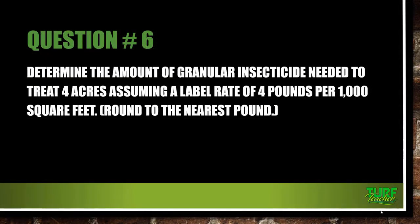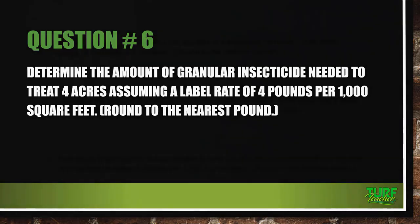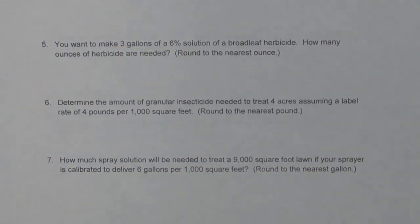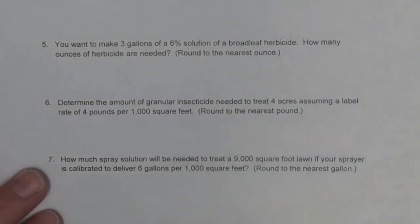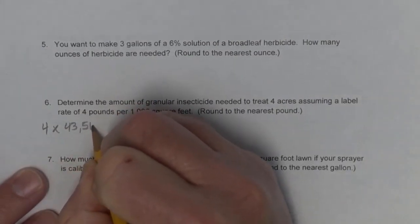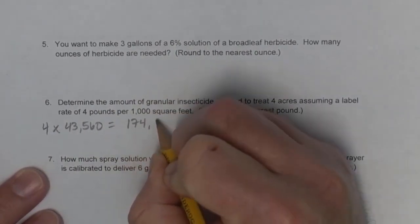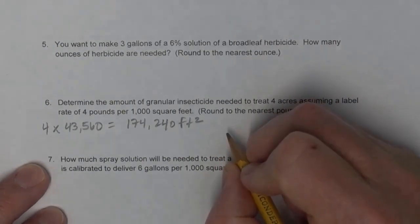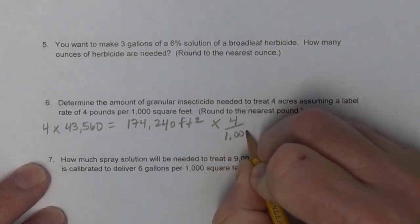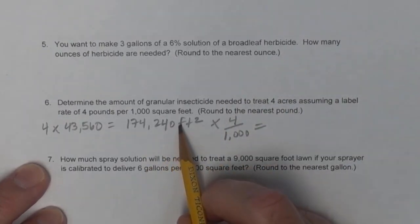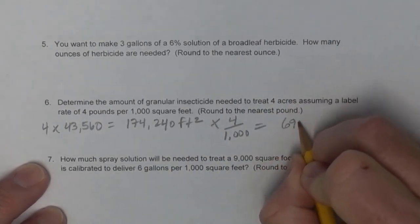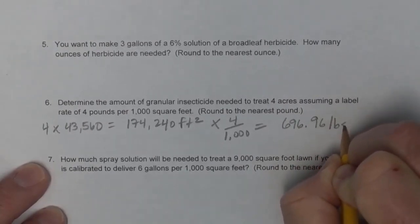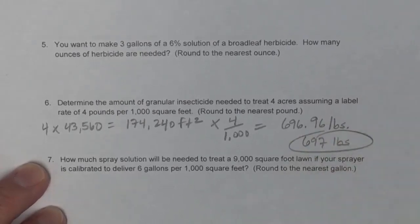Question number six: determine the amount of granular insecticide needed to treat 4 acres, assuming a label rate of 4 pounds per 1,000 square feet. Round to the nearest pound. We have 4 times 43,560, which gives 174,240 total square feet. Then multiply 174,240 times 4 divided by 1,000, which gives 696.96 pounds — rounded to 697 pounds.